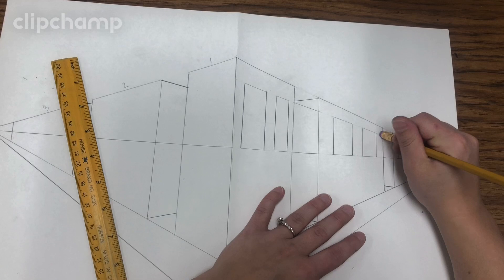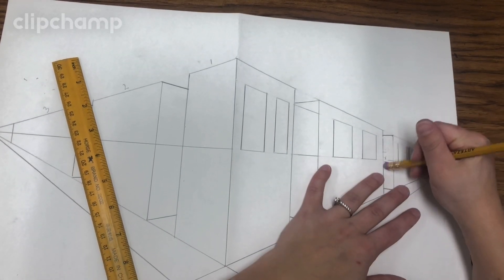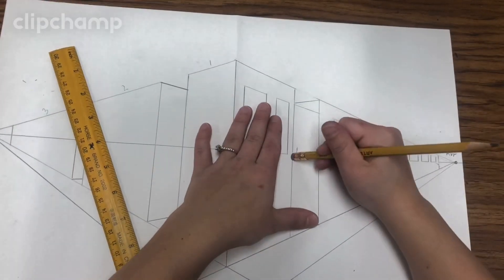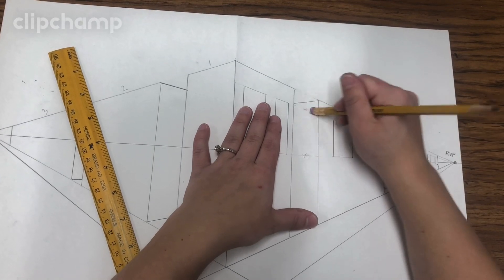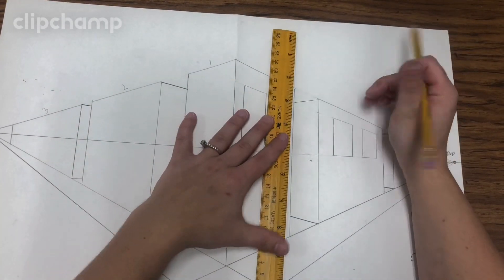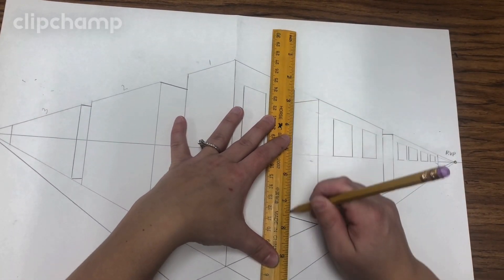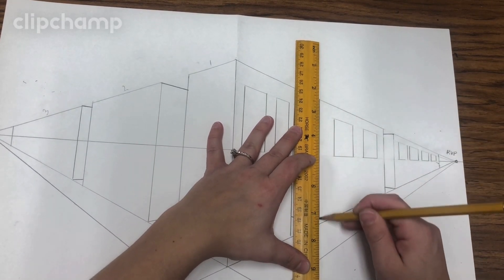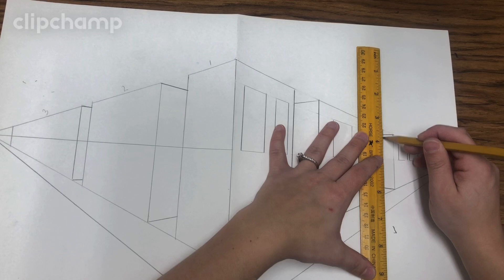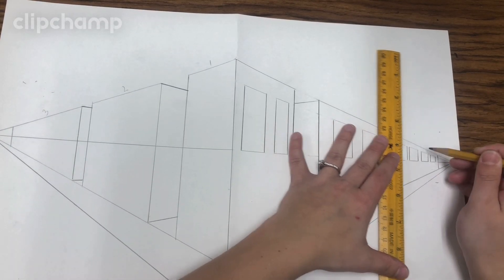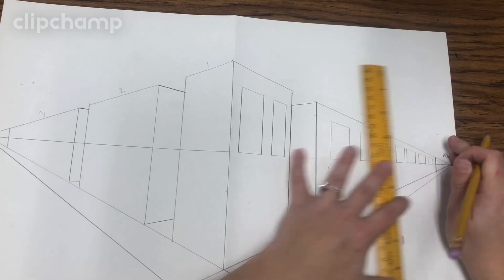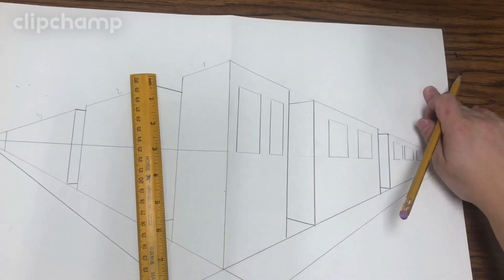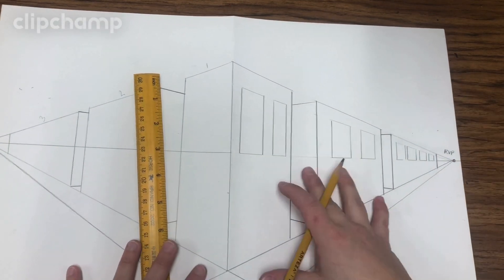So now I have my windows shaping up on my right side of my drawing. I can also go back and erase that line. I don't need it anymore on the alleys. Remember, those little spaces between our buildings are called our alleys. And if I accidentally erase anything, I can go back over that.